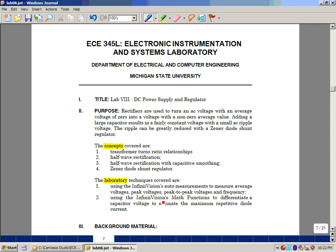We're using some of the auto measurement features on our oscilloscope to measure average voltages, peak voltages, peak to peak voltages, and frequency. We're going to use the math functions of the scope to differentiate a capacitor voltage so that we can estimate the amount of current that's flowing through our capacitor and hence our diode. And this is lab number eight, DC power supply and regulator.